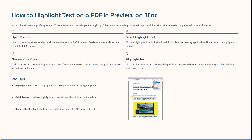So how do we highlight text on a PDF in Preview on our Mac? First, open your PDF and launch the Preview app. This is pre-installed on all Macs. Open your PDF document — Preview automatically becomes your default PDF viewer. Then click the highlighter icon in the toolbar; it looks like a pen drawing a yellow line. This activates the highlighting function.